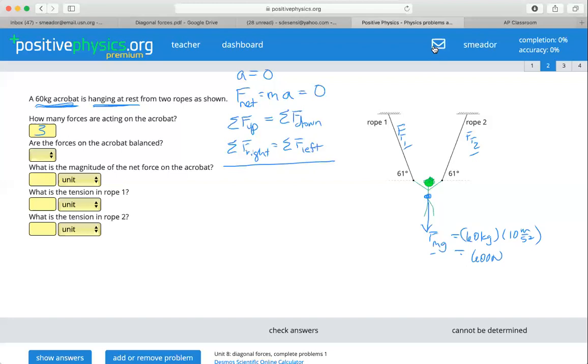Are the forces on the acrobat balanced? Well, we've already talked about this. Yes, they are. All the forces up have to equal the forces down. All of them right have to equal all of them left because there's no movement of the system. The system is at rest. So what is the magnitude of the net force on the acrobat? Once again, we've already calculated it must be zero newtons because there is no acceleration of the system.